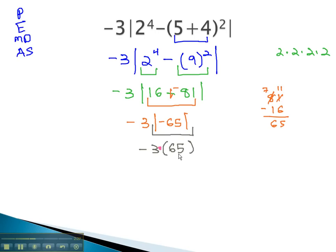And we can see at the end, the only thing left to do is negative 3 times 65. The answer is going to be negative, because we have a positive times a negative. 3 times 5 is 15, 18 and 1 is 19, so I'm getting negative 195.